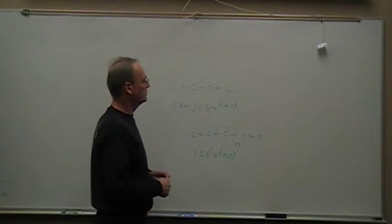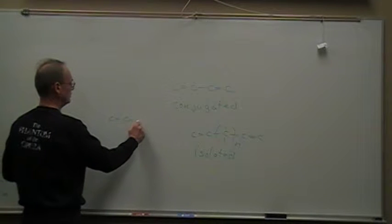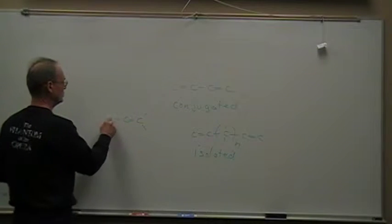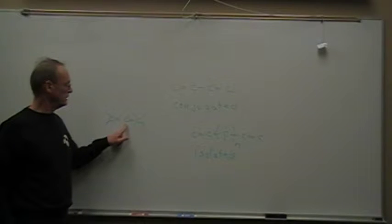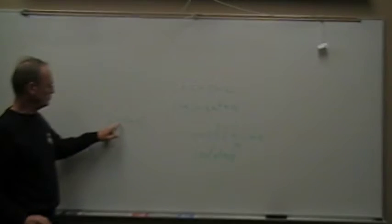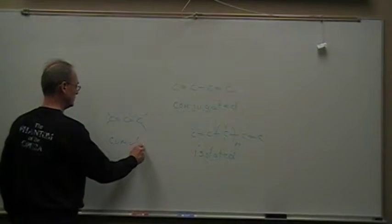The third kind is where you have two double bonds sharing an individual carbon — so you have double-double with no single bonds in between. Those are known as cumulated dienes. They're a very interesting category of compounds in and of themselves, but we won't be dealing with them in this chapter because they're not conjugated.